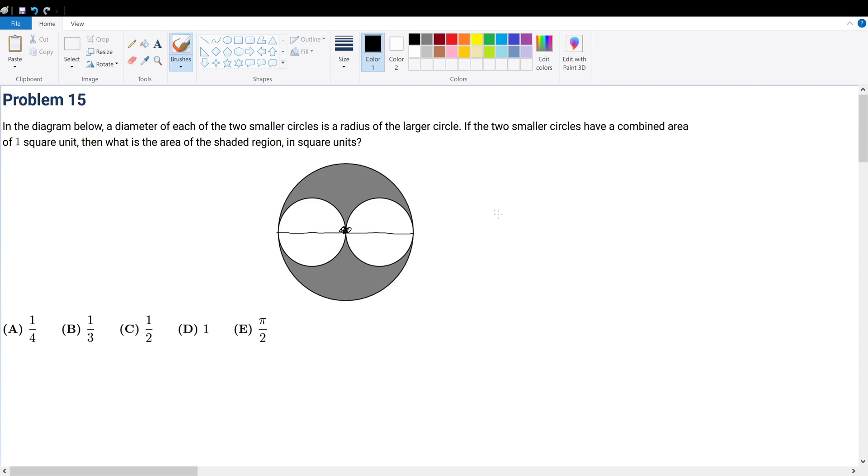So let's just first write things out. What is the area of one of these smaller circles? Well, let's say that the radius of this is r.